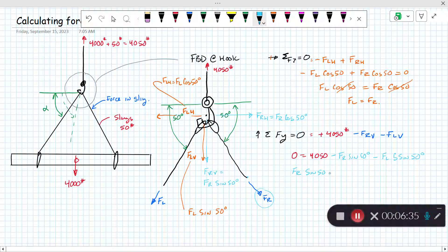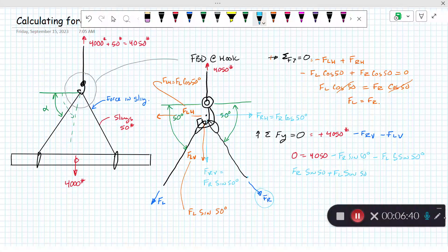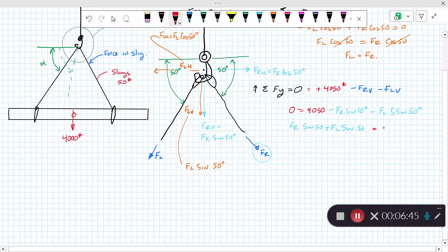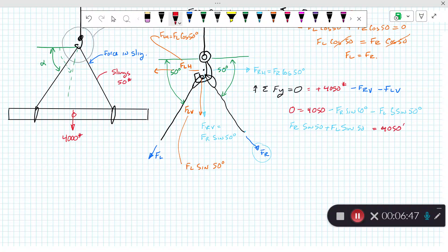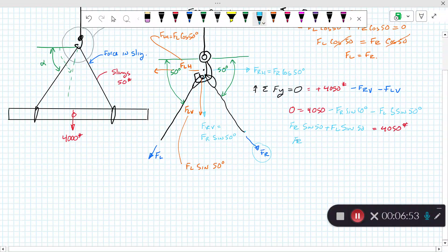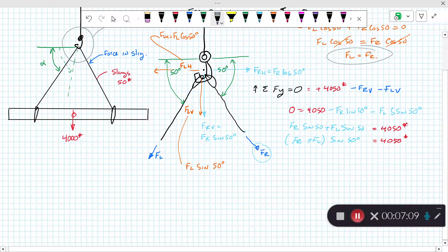Solving for that, we can bring these over: FR sine of 50 plus FL sine of 50 degrees equals 4,050 pounds. But since we know that FR and FL are the same, I can substitute one in for the other.